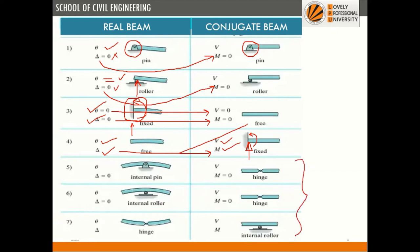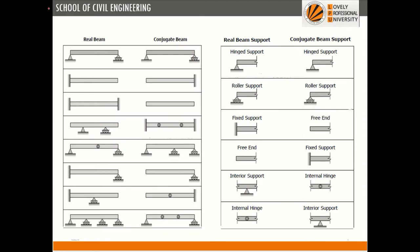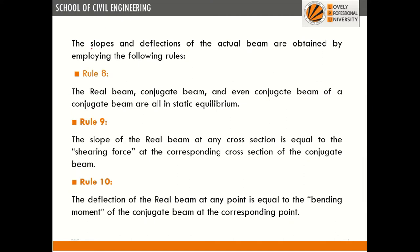Simply supported beams remain simply supported; fixed ends become free and free ends become fixed. For a fixed beam, both supports are removed in the conjugate beam. The conjugate beam obeys the laws of static equilibrium: slope in the real beam equals shear force in the conjugate beam, and deflection equals bending moment at the corresponding point.